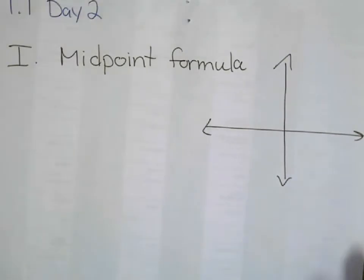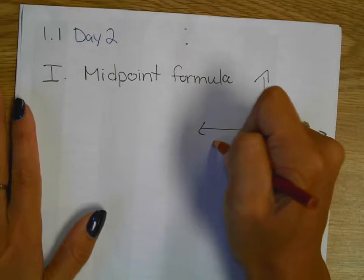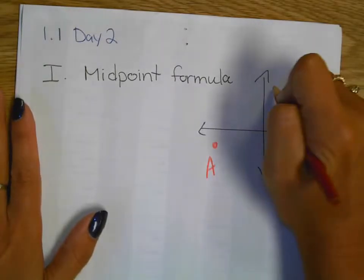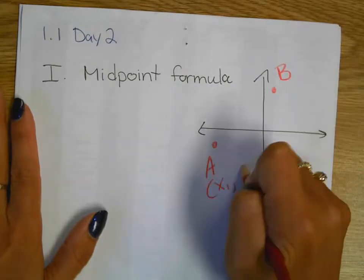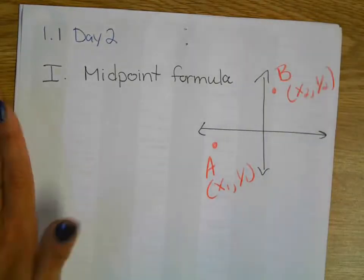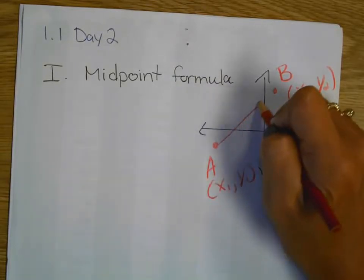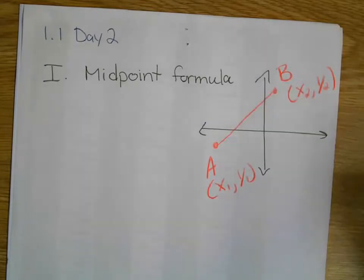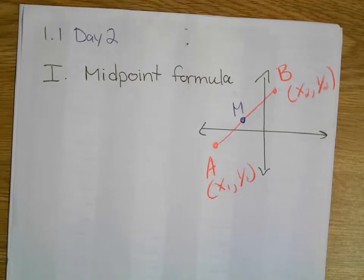So, midpoint formula. You've got 2 points, each with their own ordered pair: x sub 1, y sub 1, and x sub 2, y sub 2. And we want to have a nice easy way to find the coordinates for that midpoint so that those 2 segments are congruent.